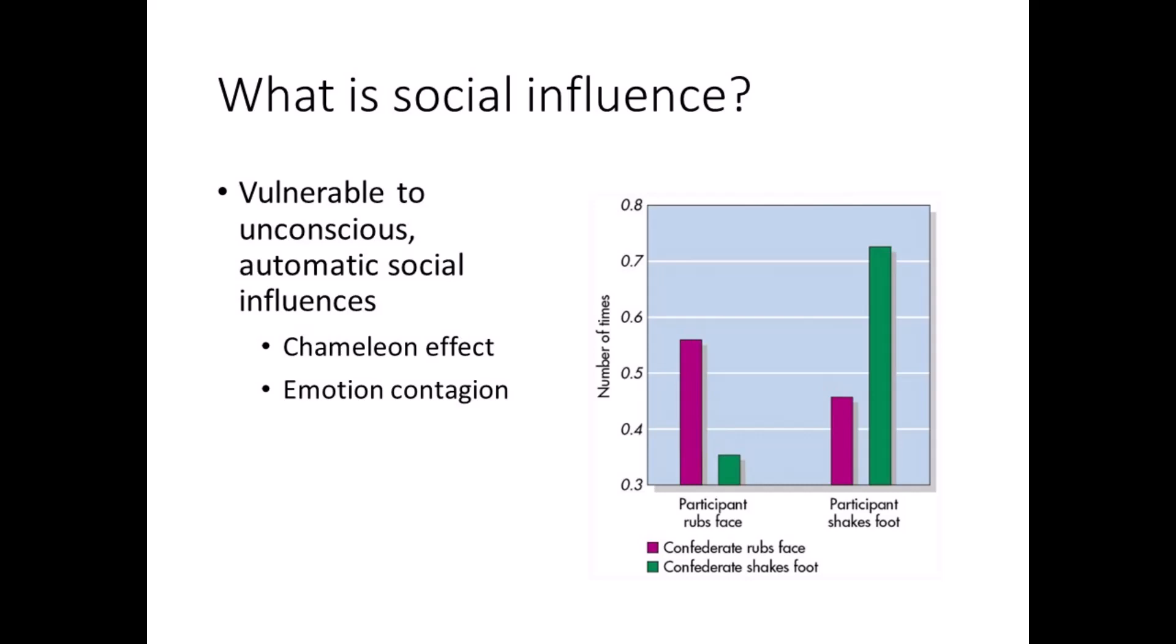Our emotions, especially negative moods and stress, can also be contagious and rub off on other people. Social psychologists speculate that social imitation may help us interact more effectively with others.